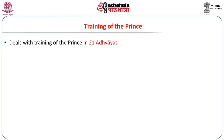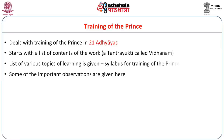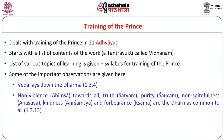Let us start with the first salient topic: the training of the prince. The text deals with this in 21 Adhyayas. It starts with a list of the contents of the work — essentially the syllabus for the king's training. An important observation is that the position of Arthashastra is that the Veda lays down the Dharma. Arthashastra is a Vedic book which has the Veda as its main support, and all dharma flows from the Veda.